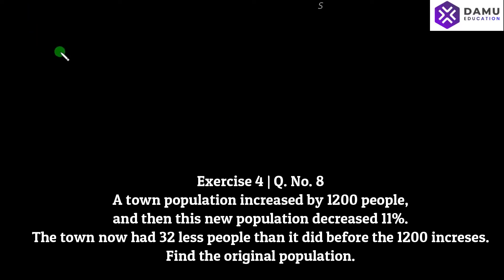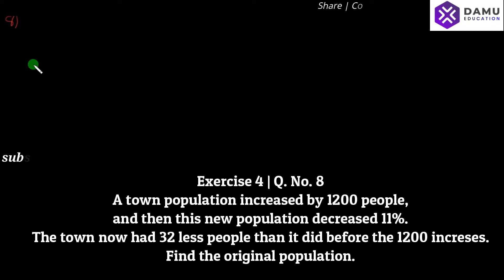Hello viewers, thanks for watching our videos. If not subscribed, please subscribe. In this module we're going to discuss the solution for question 8. The question is: a town population increased by 1200 people, and then this new population decreased by 11 percent. The town now had 32 less people than before the 1200 increase. Find the original population.